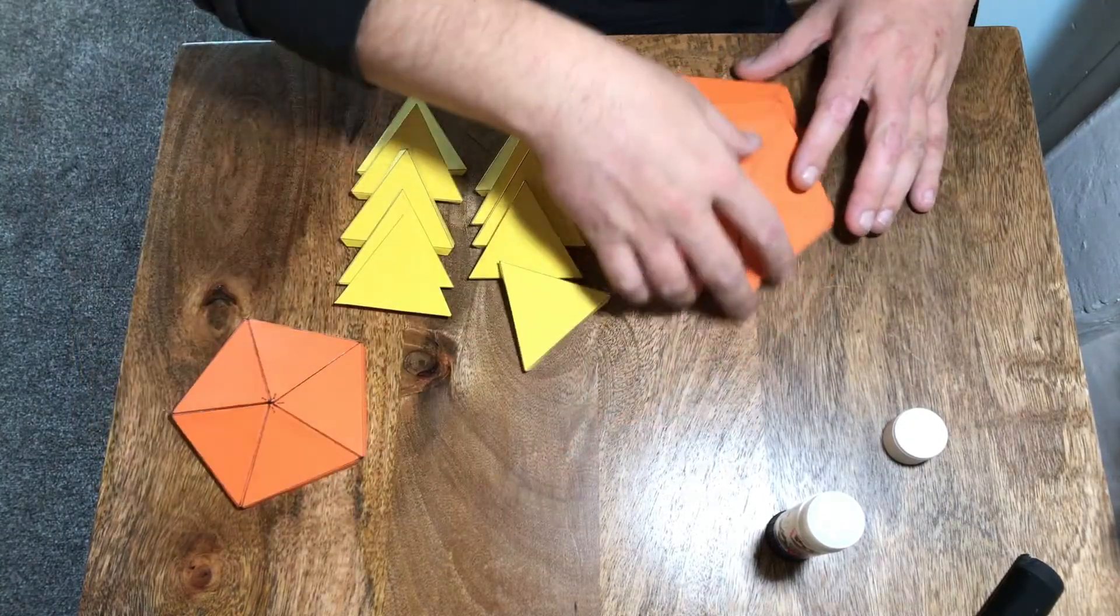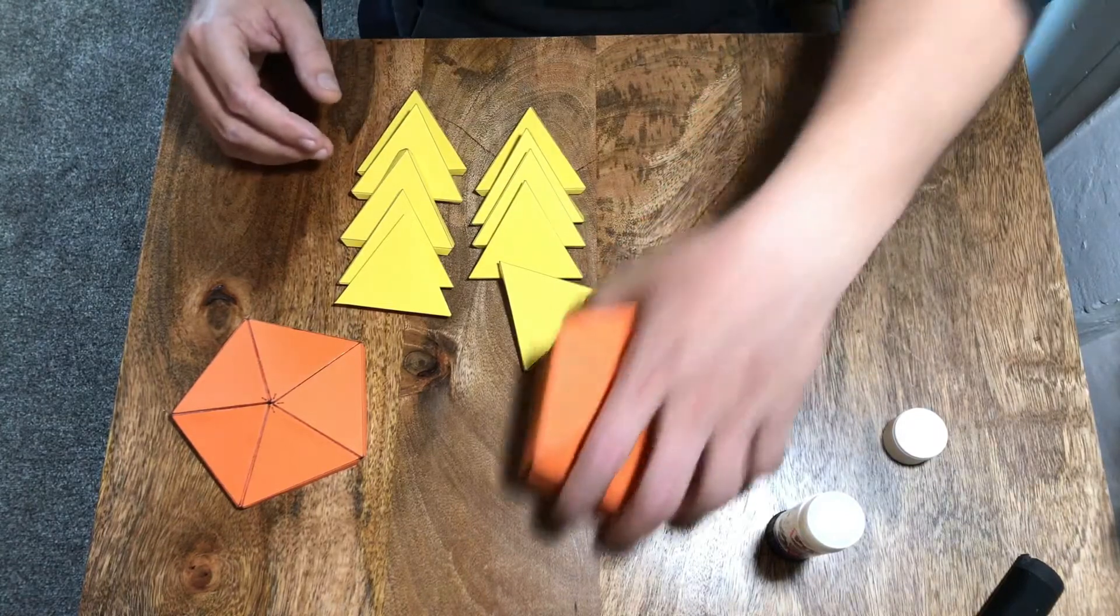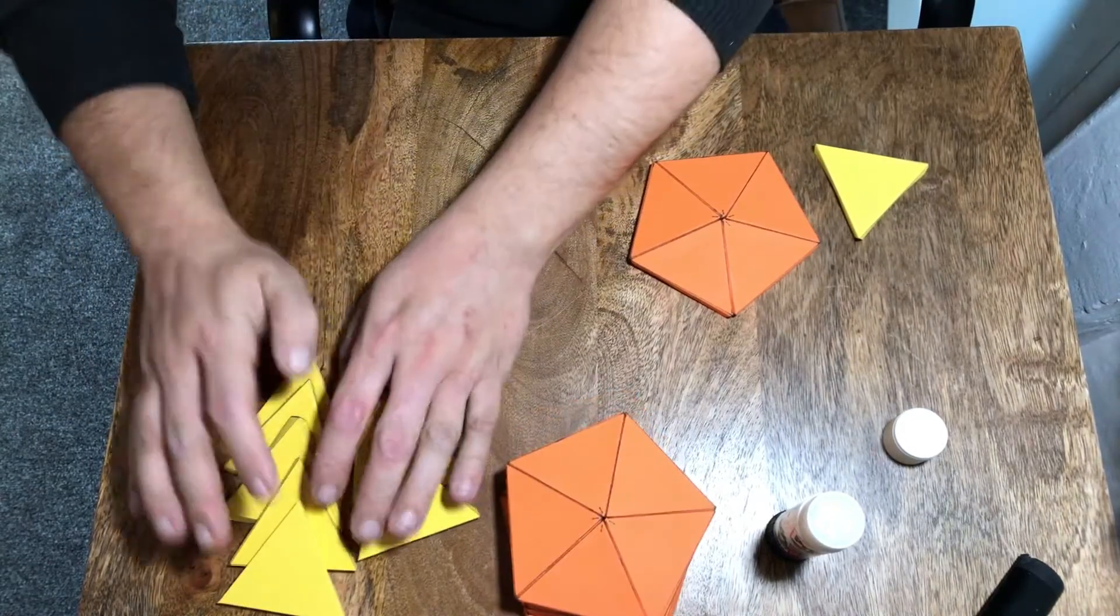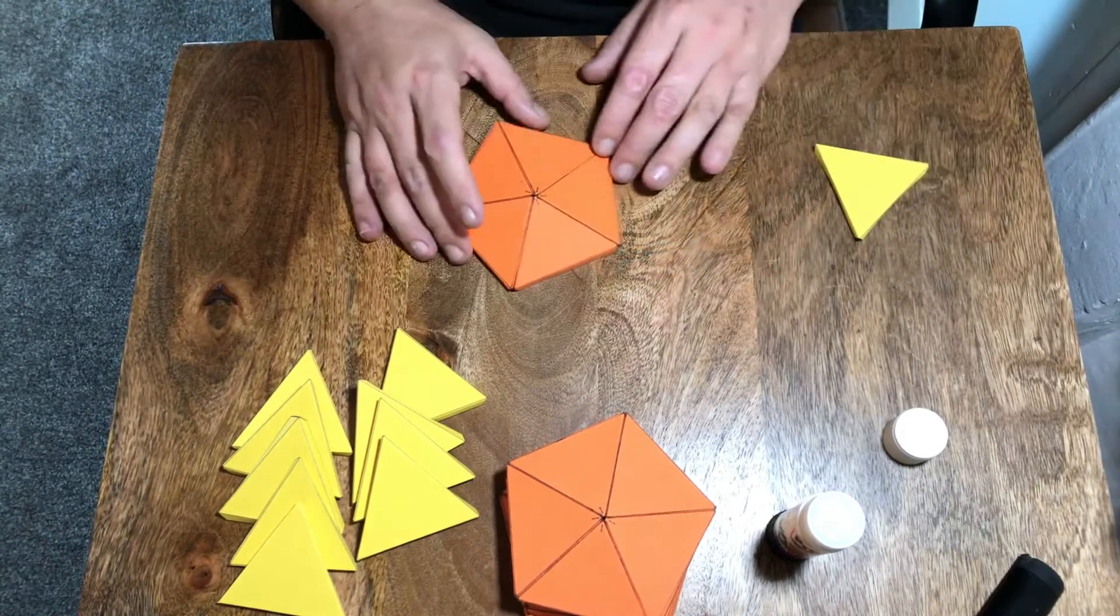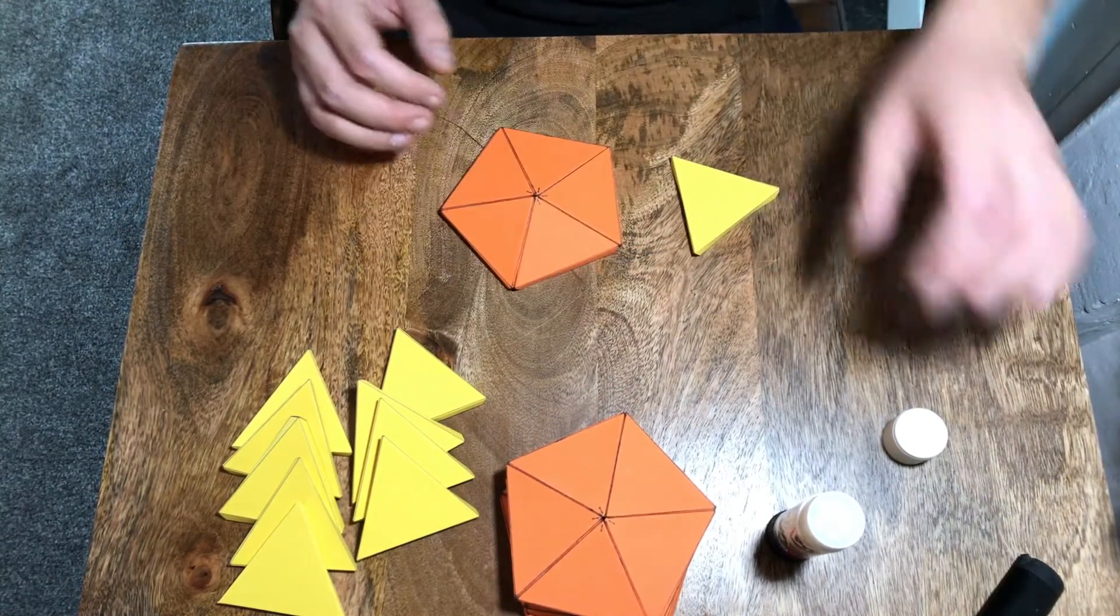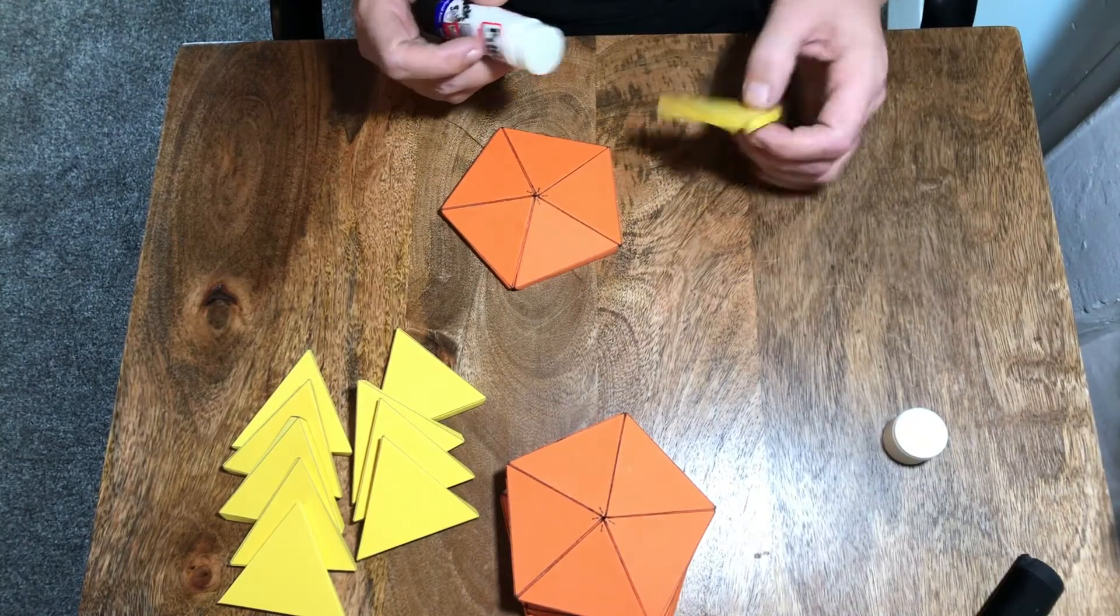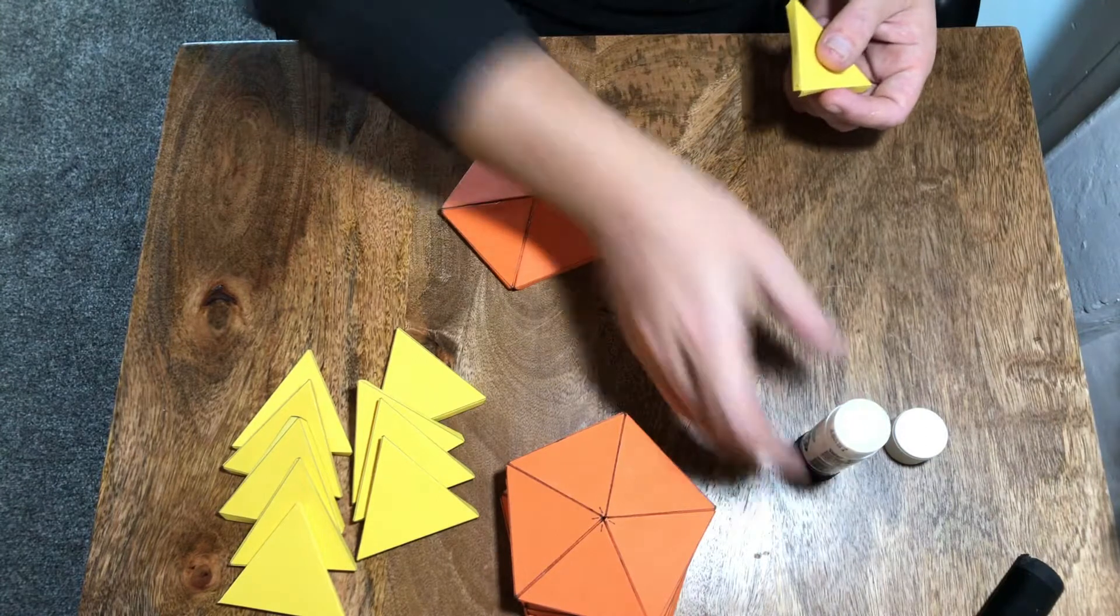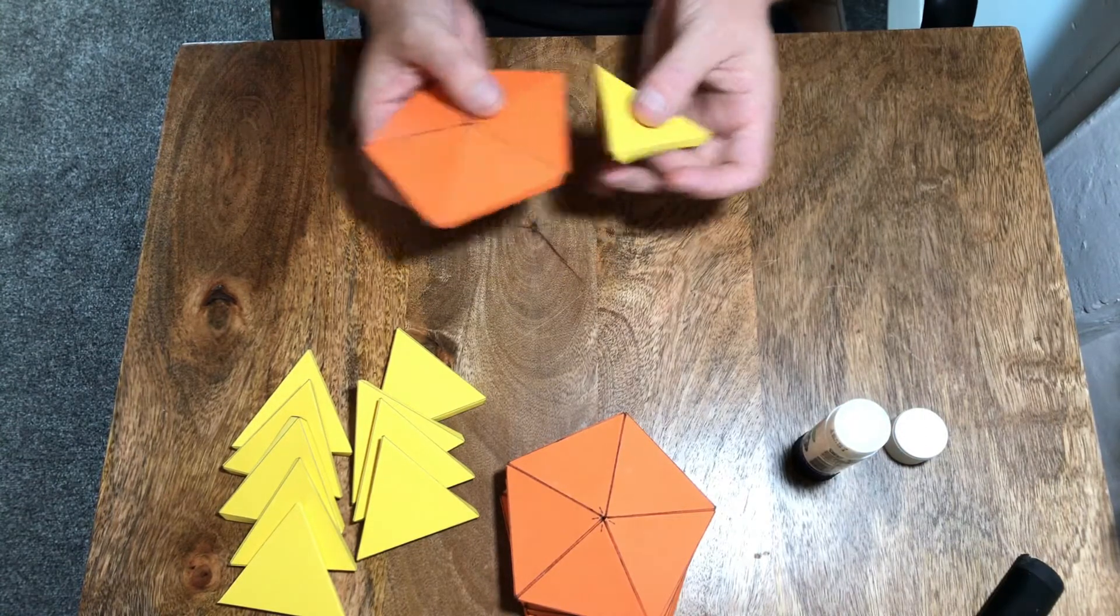So I'm just going to make myself a little bit of room here. The first thing we want to do is we're going to take one of our pentagon pieces and we're going to take one of our equilateral triangles, and we're just going to apply some glue to the edge here and fix that on.